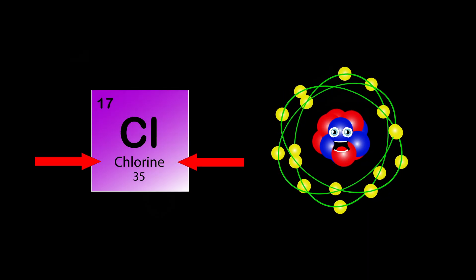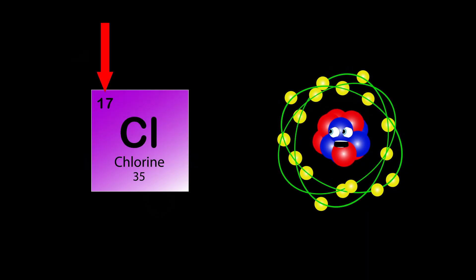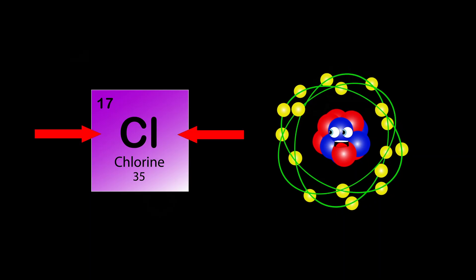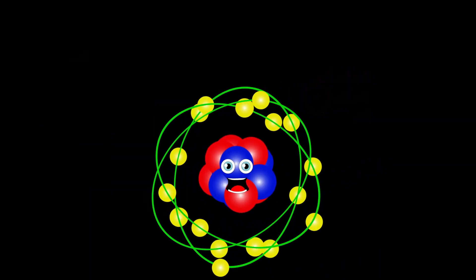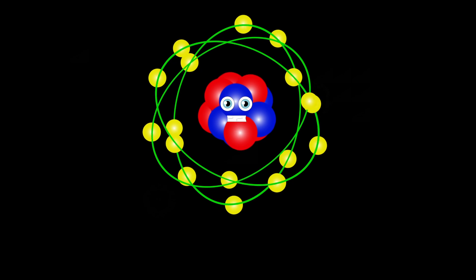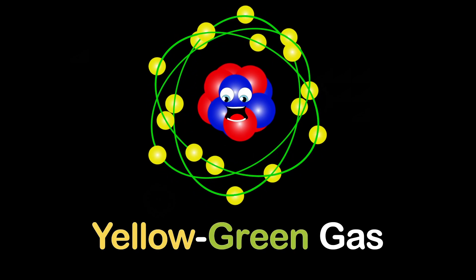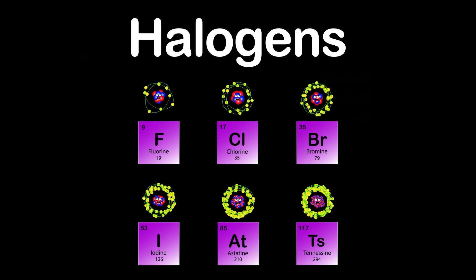I'm Chlorine, my atomic number is 17, my atomic mass is 35. Cl's my symbol you can see. I'm the second lightest of halogens in this class, and when I'm at room temperature I'm a yellow-green gas.